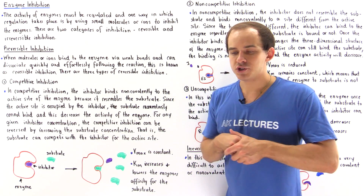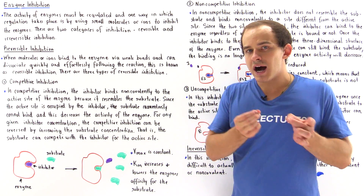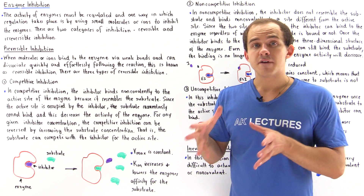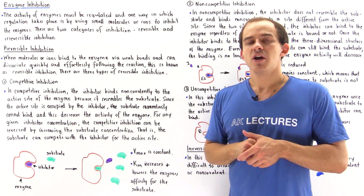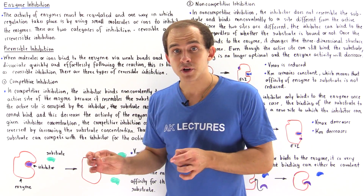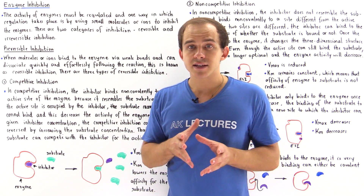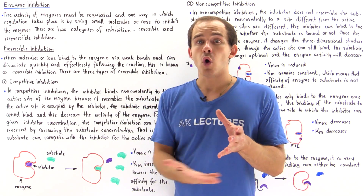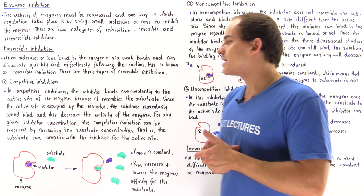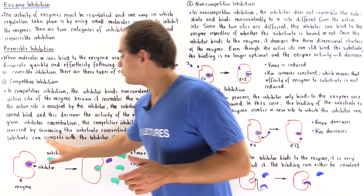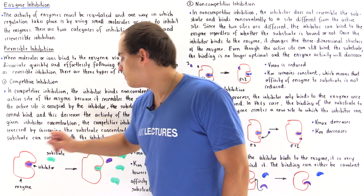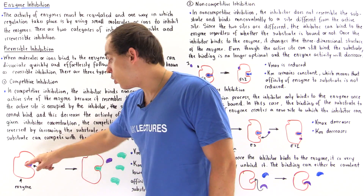In competitive inhibition, our inhibitor molecule or ion actually binds to the active site of that enzyme because the structure of our inhibitor actually resembles the structure of our substrate. Since the active site is occupied by that inhibitor, momentarily our enzyme will no longer be active, and that substrate will no longer be able to bind into the active site. This situation is described in the diagram — we have the enzyme, the substrate shown in green, the inhibitor shown in purple, and the active site.